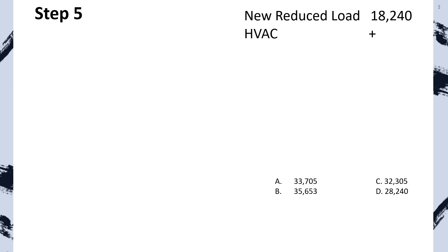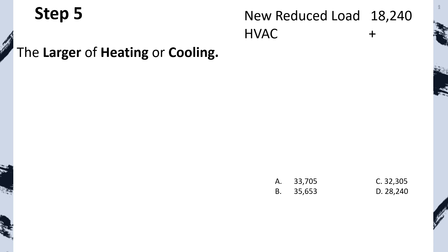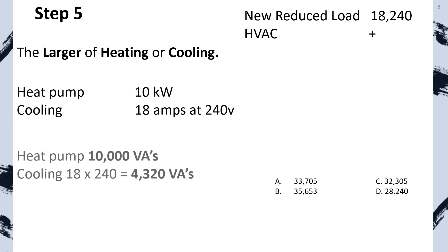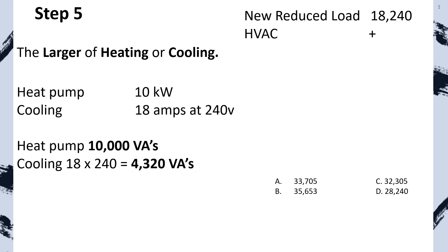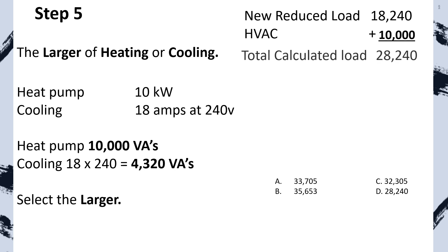Now that we have our new reduced load, let's add in our HVAC. We select the larger of heating or cooling, work all the math out — clearly the heat is much larger — and add that to the party. After we do, we're going to have a total connected load of 28,240 VAs. Great job!